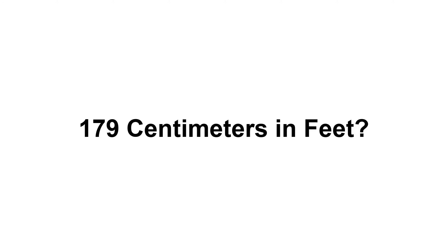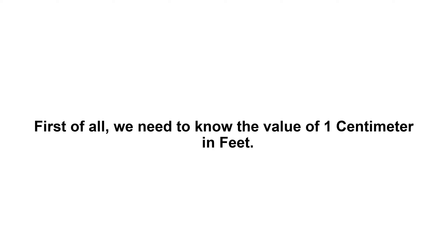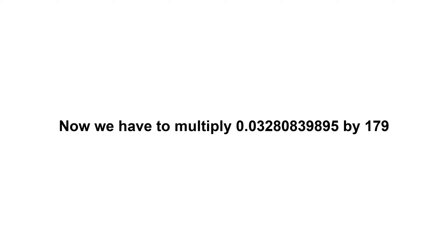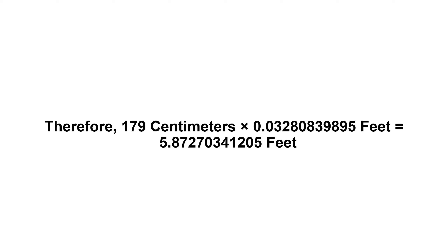179 centimeters in feet. First of all, we need to know the value of one centimeter in feet. One centimeter equals 0.03280839895 feet. Now we have to multiply 0.03280839895 by 179. Therefore, 179 centimeters times 0.03280839895 feet equals...